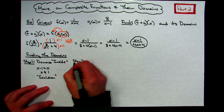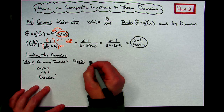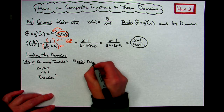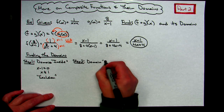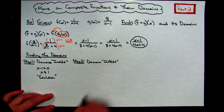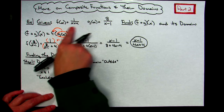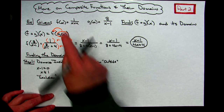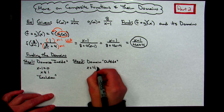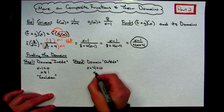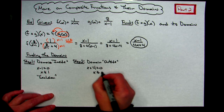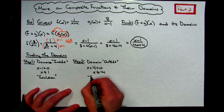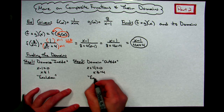Step 2: find the domain of the outside function. The outside function is f of x. Again, it's a rational function, so set the denominator equal to 0: x plus 4 equals 0. Subtract 4 from both sides — x cannot equal negative 4. That's the exclusion for the domain of the outside function.